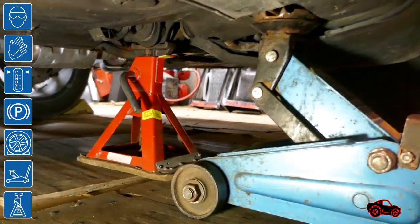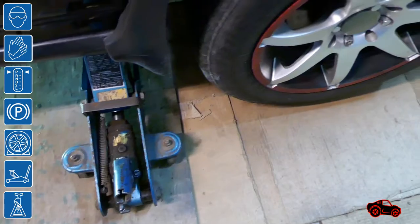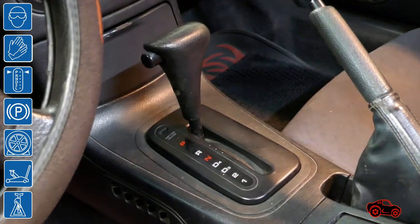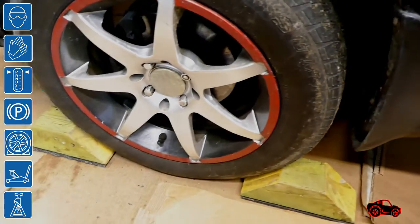To begin, I jacked up the front right corner of the vehicle to be able to film the wheel while I was testing the sensor. For safety, I engaged the parking brake, I used a jack stand, and I blocked the wheels that were on the ground with wheel chocks.